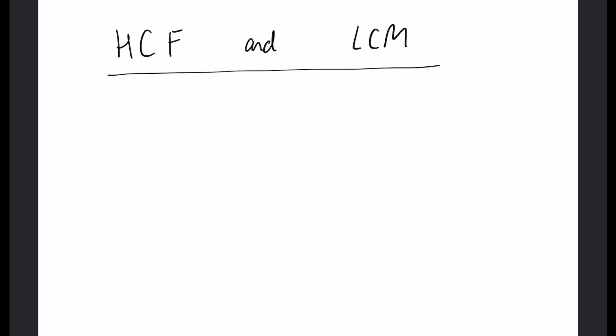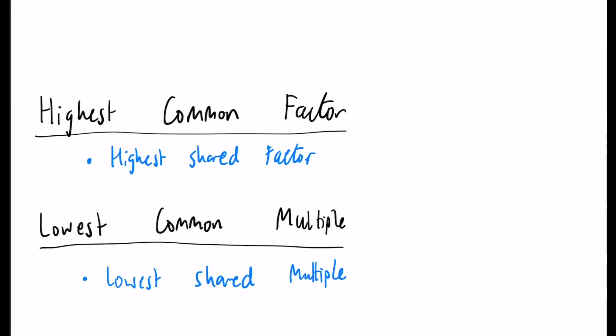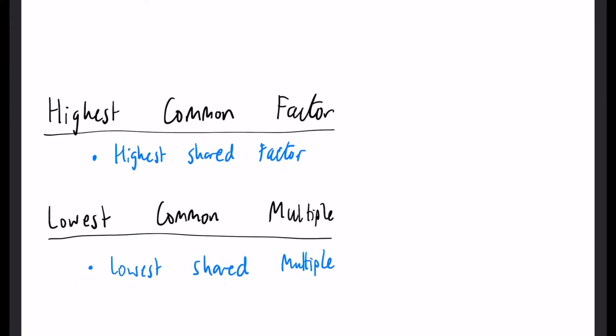In this video we'll be looking at HCF and LCM, a very common GCSE topic in exams. HCF stands for highest common factor and LCM stands for lowest common multiple. If you're not 100% confident with factors and multiples, I recommend watching my video on that first. These are always looked at as a pair — two numbers — and the aim is to find the highest shared factor and the lowest shared multiple between them.